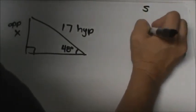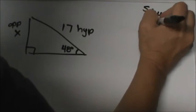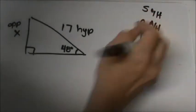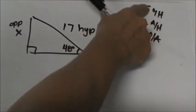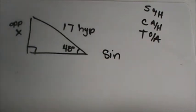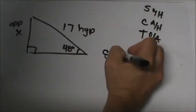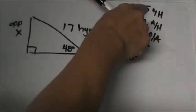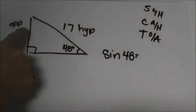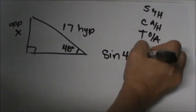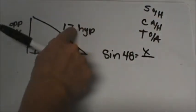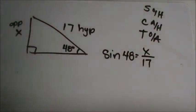So we have sine, cosine — and which trig function uses the opposite and the hypotenuse? Well, that's the sine function, because sine is opposite over hypotenuse. So I'm going to set up the sine of 48 degrees — that's my reference angle — and that's equal to the opposite, which is my unknown, on top, and my hypotenuse of 17 on the bottom. So the first problem is the sine of 48 is equal to x over 17.